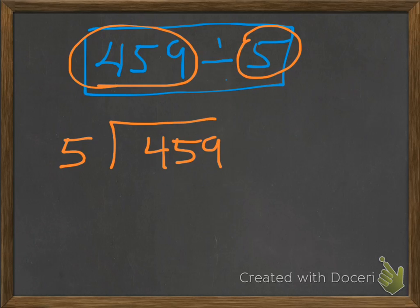And again, we want to take a look and say something times 5 will get us close. But once again, we look at the hundreds, we can't really start there. 5 times nothing will get us 4, even close to 4, at least not go over 4.